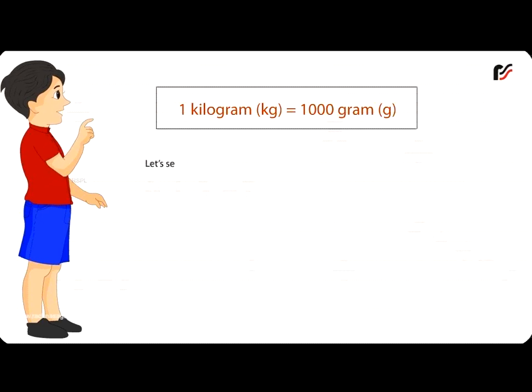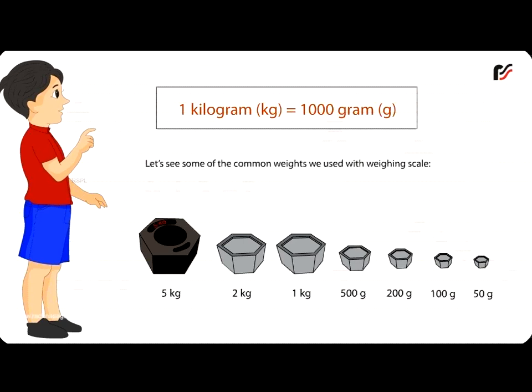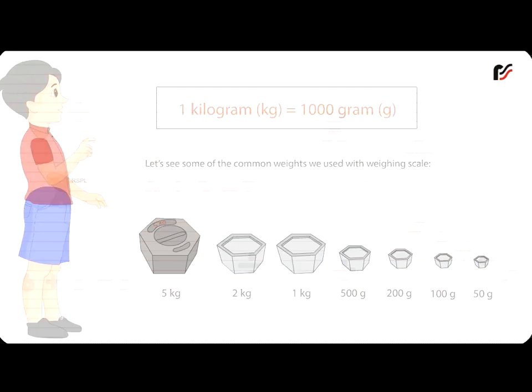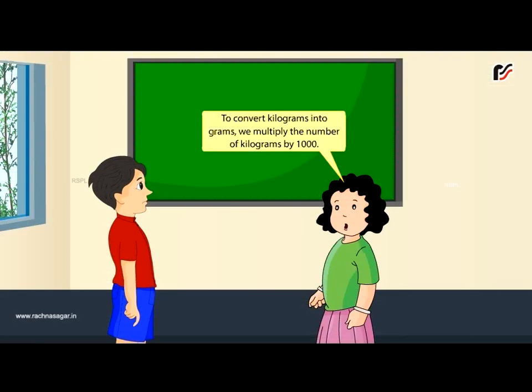Let's see some of the common weights we use with weighing scale: 5 kg, 2 kg, 1 kg, 500 g, 200 g, 100 g, 50 g. Conversion: To convert kilograms into grams, we multiply the number of kilograms by 1000.